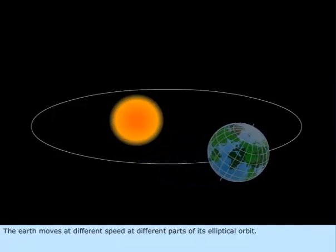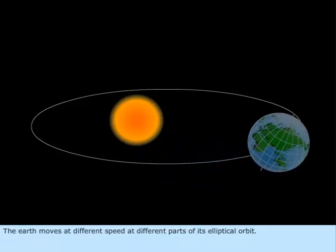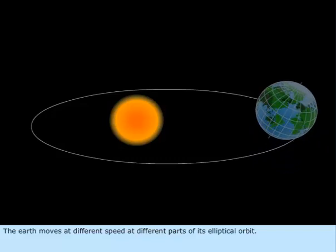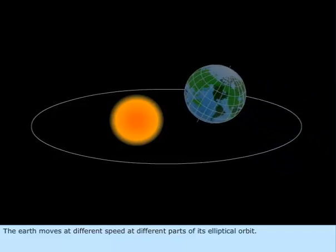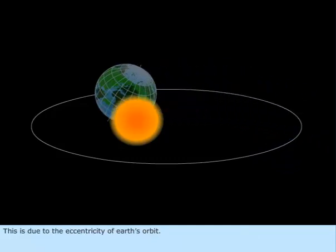The Earth moves at different speed at different parts of its elliptical orbit. This is due to the eccentricity of Earth's orbit.